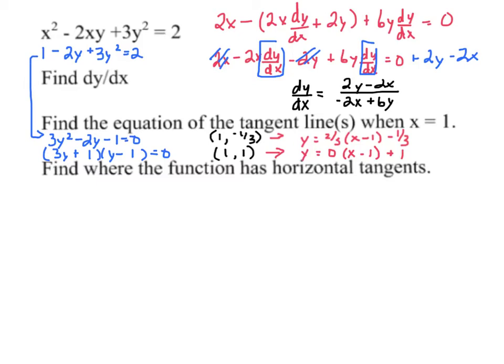All right, now horizontal tangents. Well, horizontal tangents occur where the derivative is 0. And more specifically for us, it's where the numerator would be 0. So 2y minus 2x equals 0. So that means 2y is equal to 2x, which means that y is equal to x.